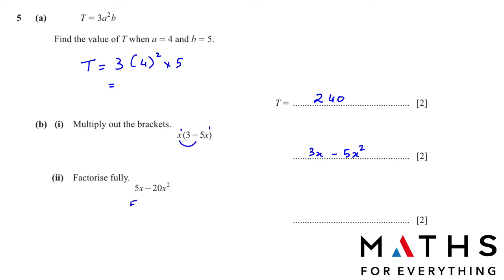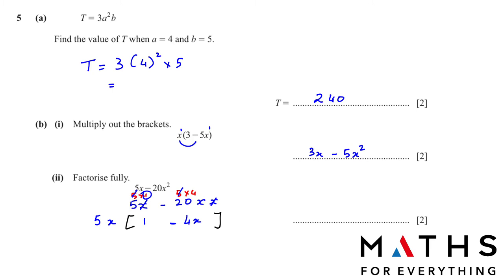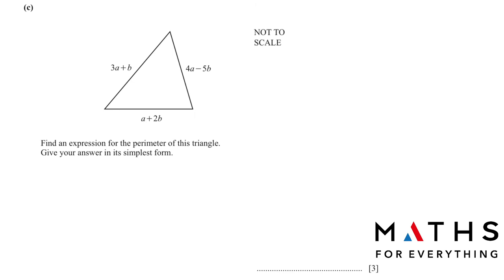Factorize fully: 5x minus 20x². We see that 5 is common and x is common. Taking out 5x, we are left with 1 minus 4x. So the fully factorized answer is 5x(1 minus 4x). Factorizing is very important and you need to be very good at it.